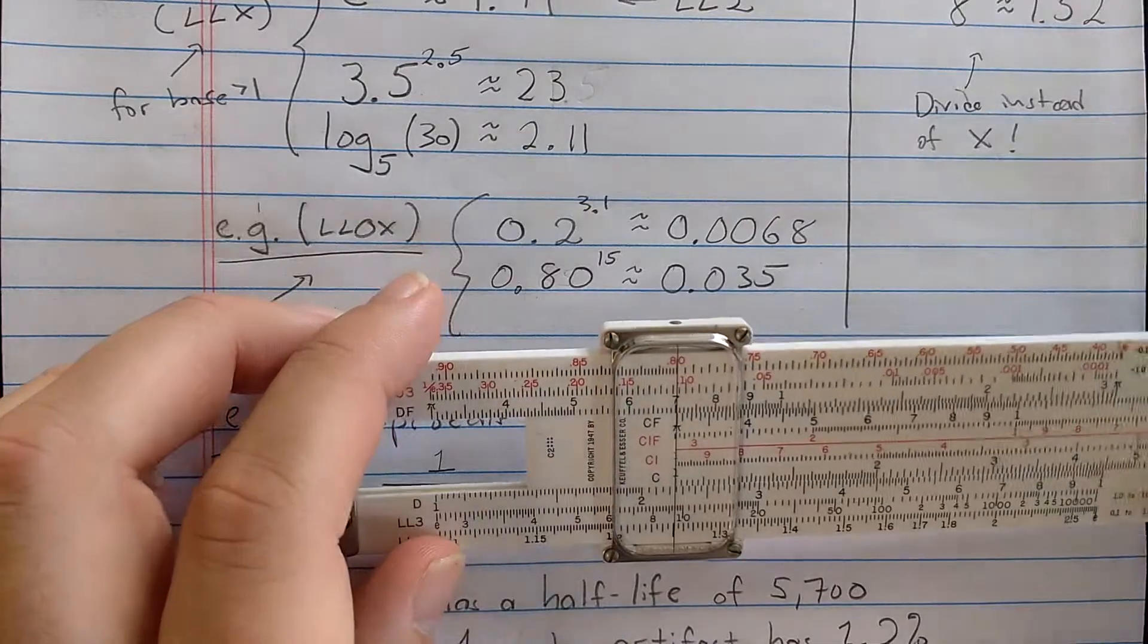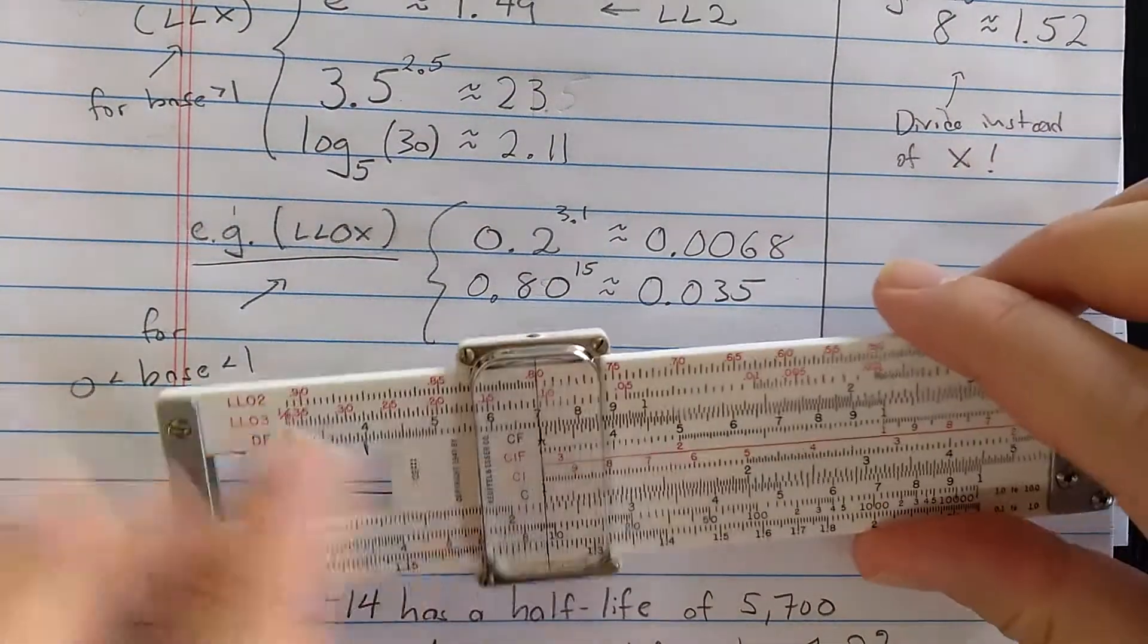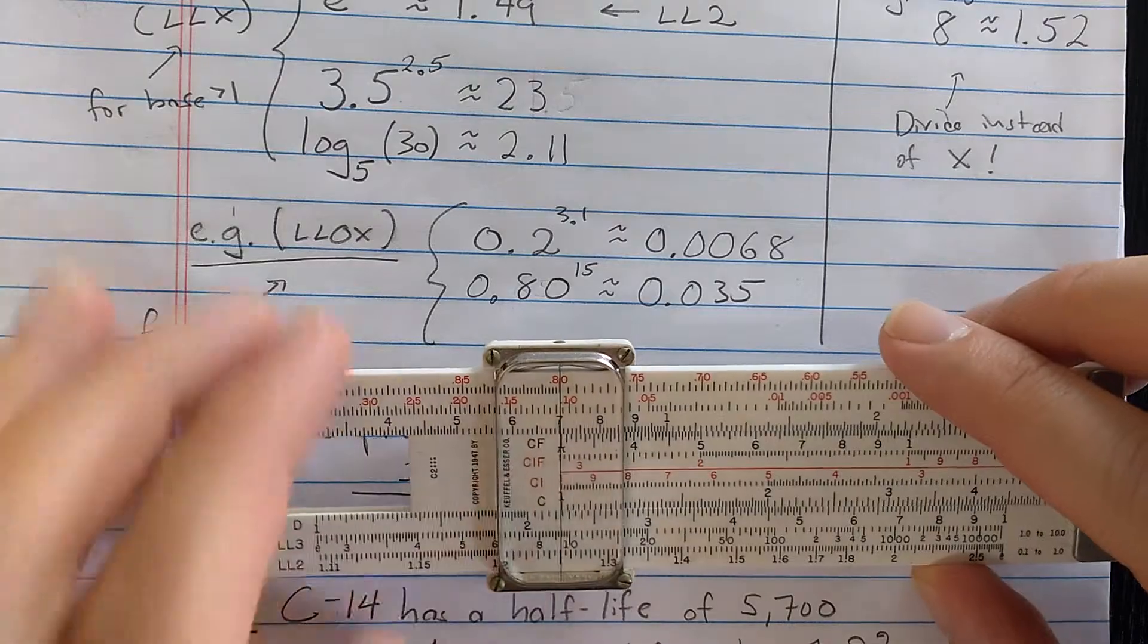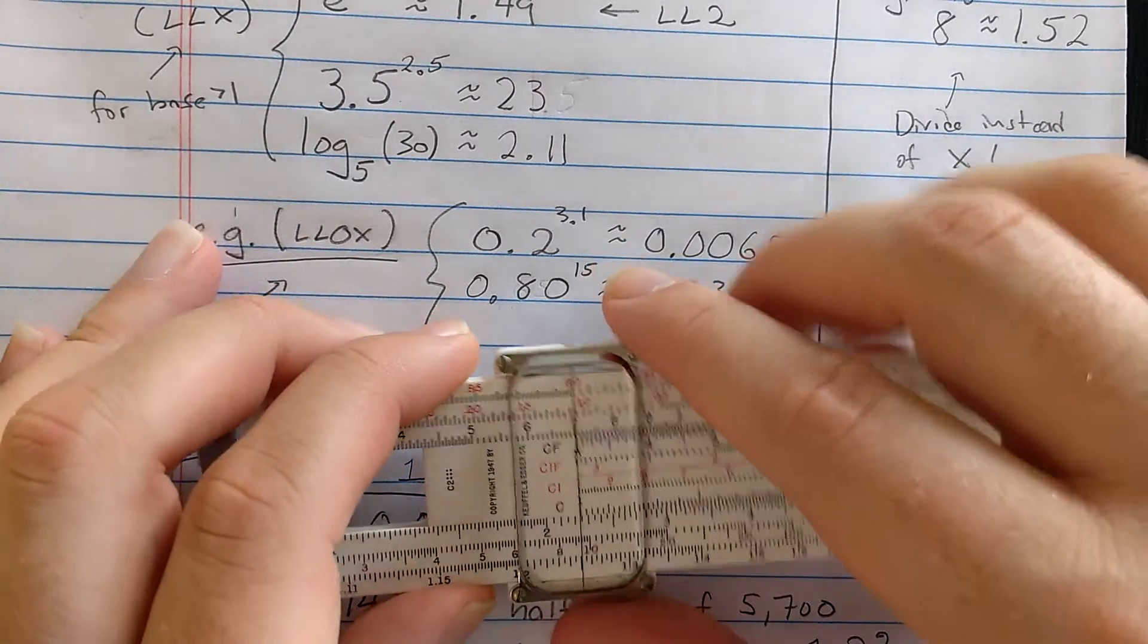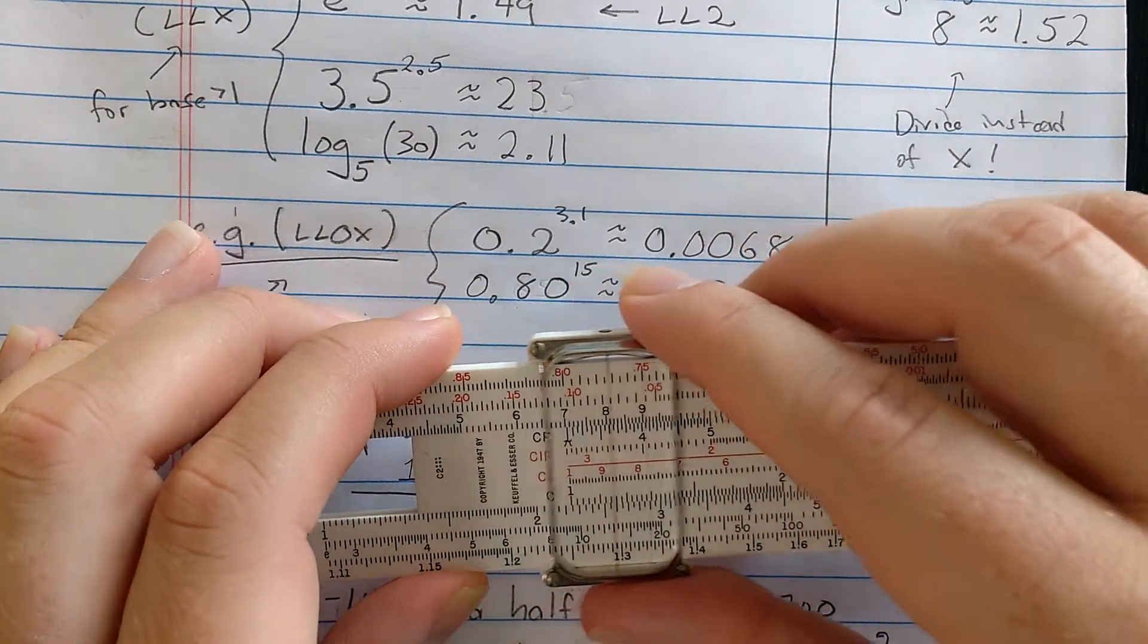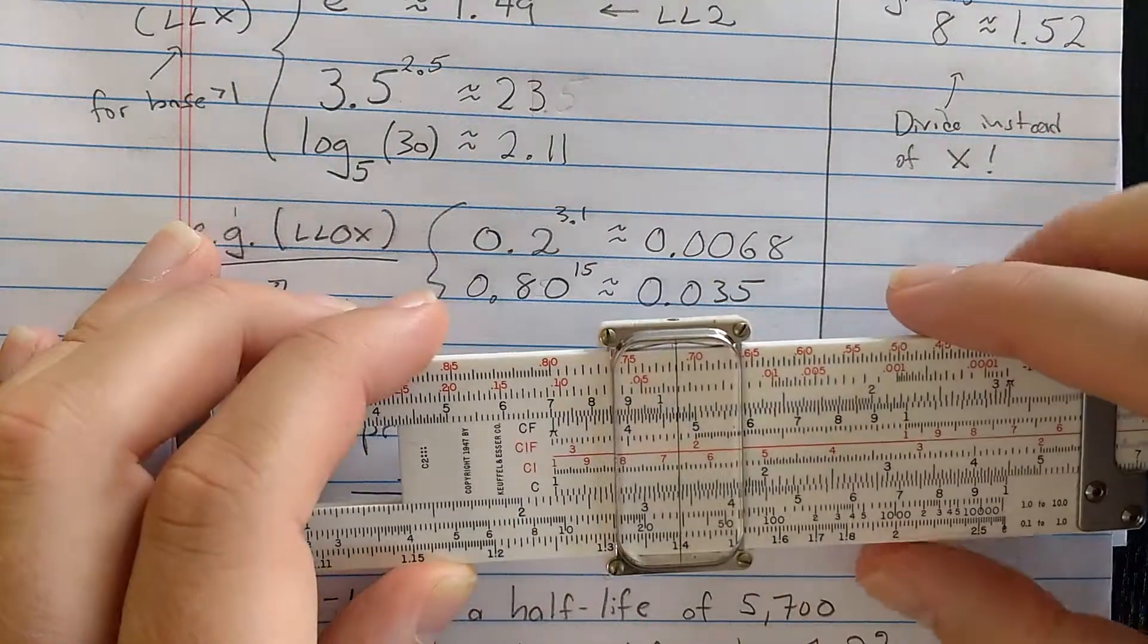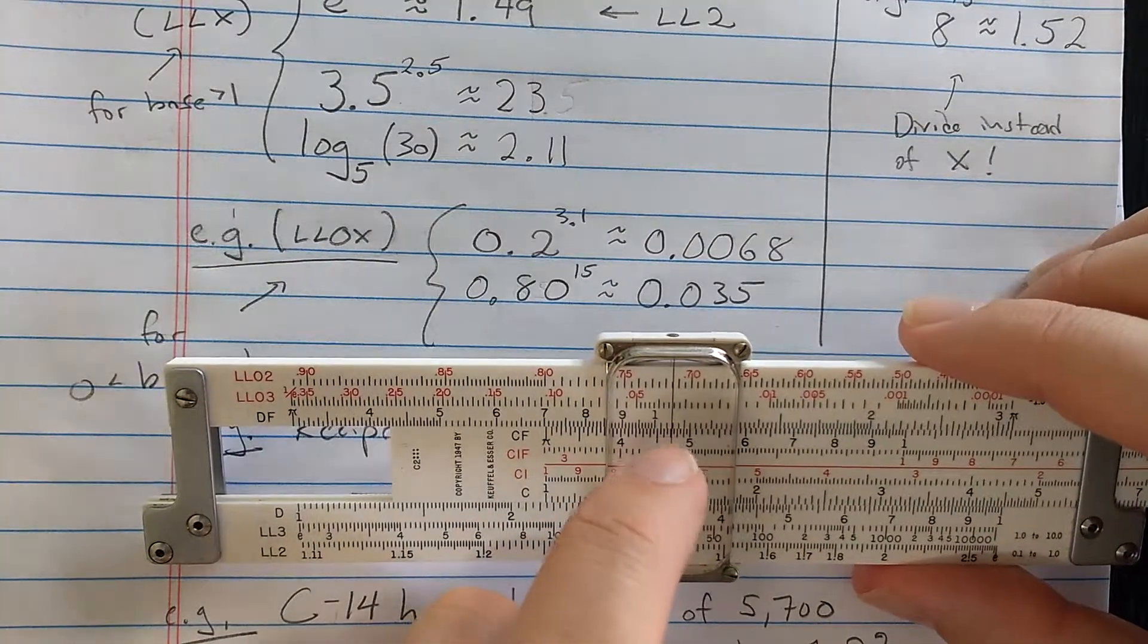If I align the index, moving along the LL3 scale all the way to the end, which is really where the cursor is on the LL03 scale is reading out to exponent 10. What do I want to do to get to exponent 15? Well, now I'm in the next order of magnitude on the C scale. So 15 is really 1.5. So right here, this is really 10. So I just need to go out to here to the 15.